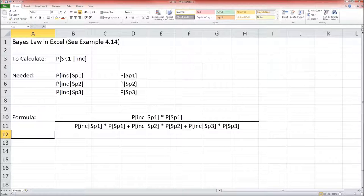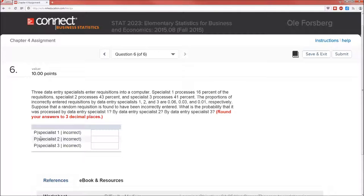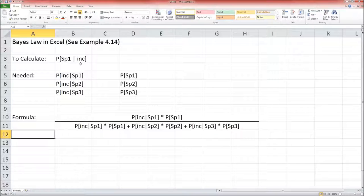We're asked the probability of specialist 1 given incorrect. So we'll calculate the probability of specialist 1 given incorrect. I got tired of typing some things so I abbreviated it. There's six pieces of information we need to know. We need to know the probability of incorrect given specialist 1, probability incorrect given specialist 2, probability incorrect given specialist 3, and the probability that the requisition is filled out by specialist 1, 2, and 3. Once we have those six pieces of information we can use Bayes' law formula.